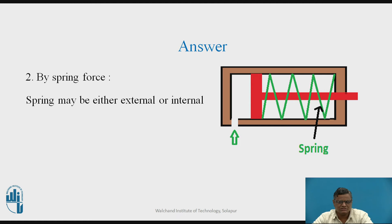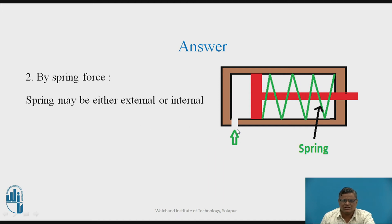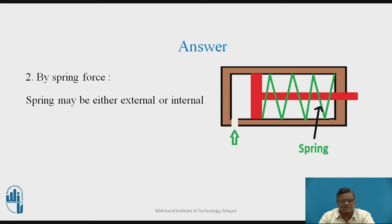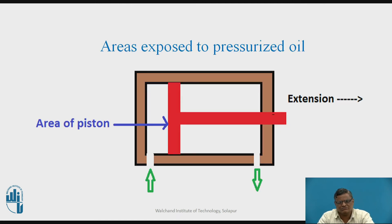If the cylinder is not mounted vertically, another means for return is a spring. When pressurized oil is supplied to the left hand side port, the forward stroke of the piston occurs and the spring gets compressed. When oil supply is stopped, the spring pushes the piston back to its original position. The spring can be mounted either inside or outside the cylinder.